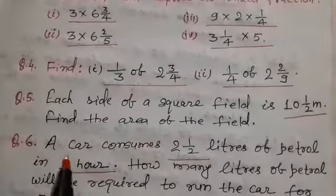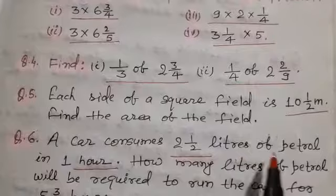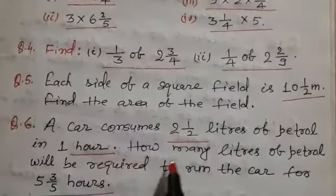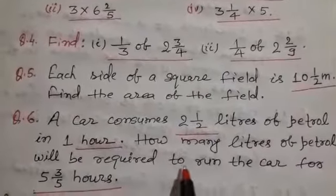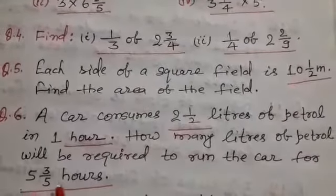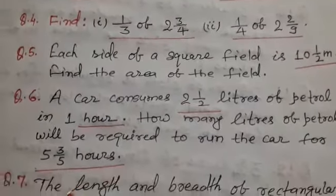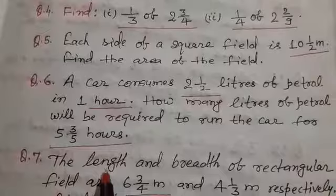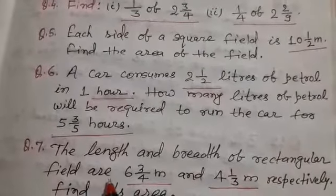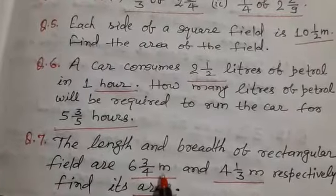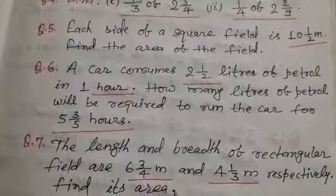Question number 6 is how many liters of petrol will be required to run the car for 5 and 3 by 5 hours? Question number 7 is the length and breadth of rectangular field are 6 and 3 by 4 meter and 4 and 1 by 3 meter respectively, find its area.